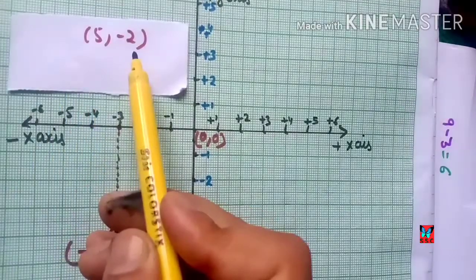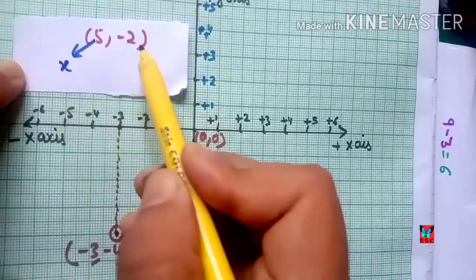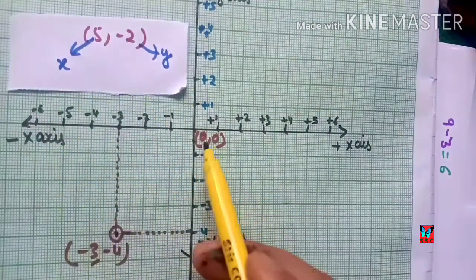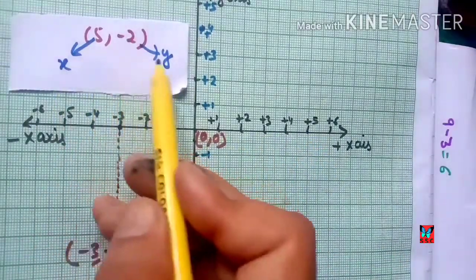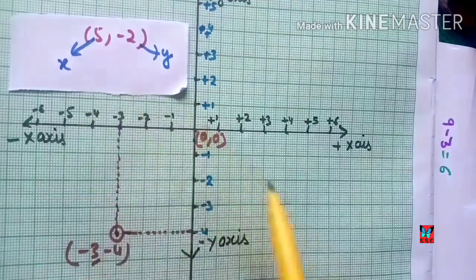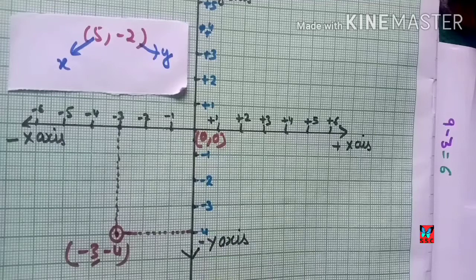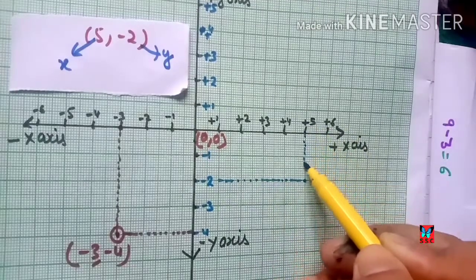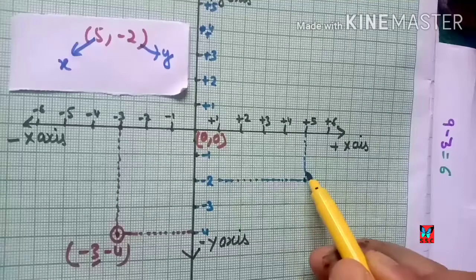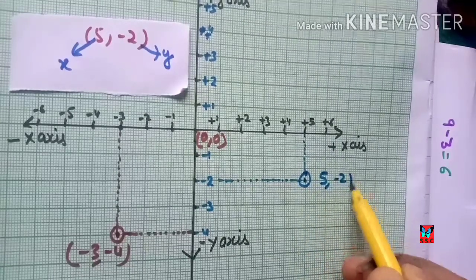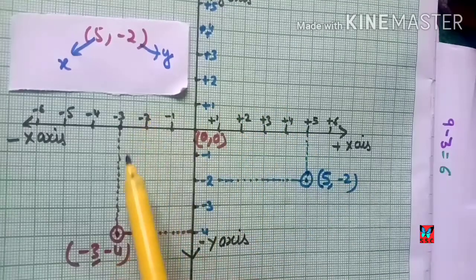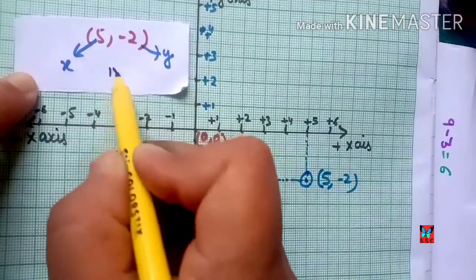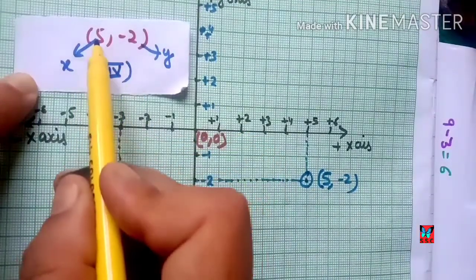Now I will plot the point (5, -2). The x-coordinate, also known as the abscissa, is 5, and the ordinate is -2. On the x-axis we go to positive 5, and on the y-axis we go to minus 2 (negative y-axis, below). Where these two lines intersect is the point (5, -2), which lies in the fourth quadrant, where x is positive and y is negative.